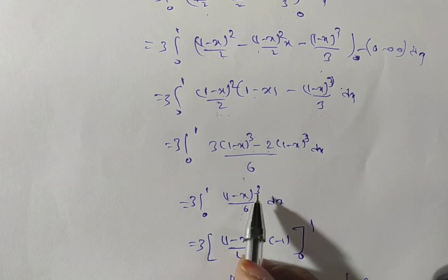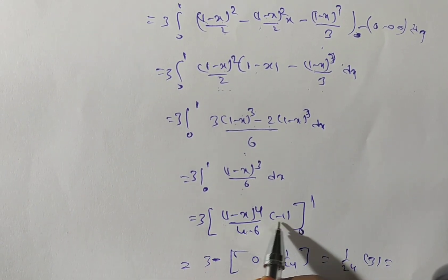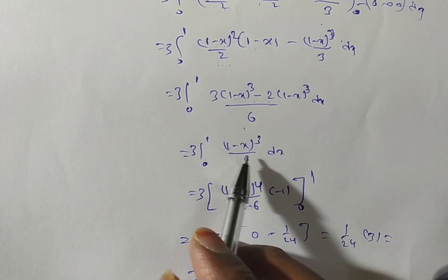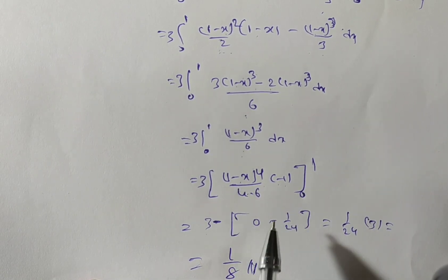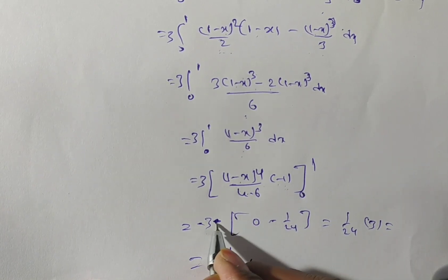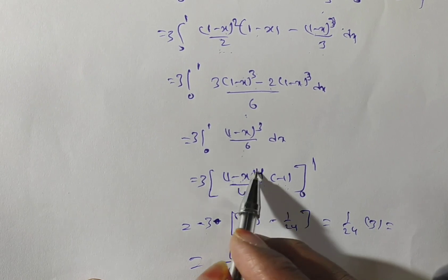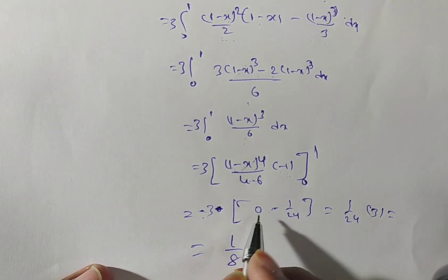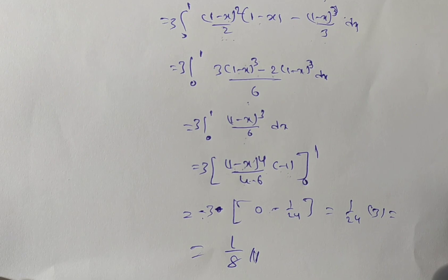Now integrate (1−x)³/6 with respect to x from 0 to 1, multiplied by the constant 3. Using the bracket-power integration rule: (1−x)⁴/(4·6·(−1)) with limits 0 to 1. Substituting upper limit x = 1: (1−1)⁴ = 0. Substituting lower limit x = 0: −3/(24) × (−1) = 3/24 = 1/8. Therefore, the surface integral equals 1/8. Thank you for watching.